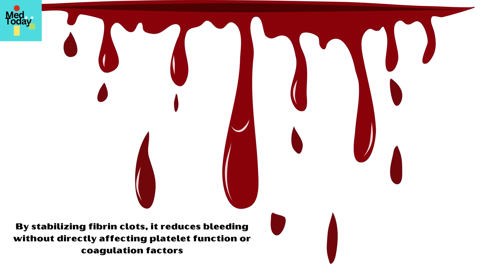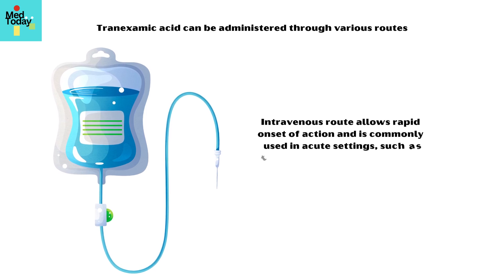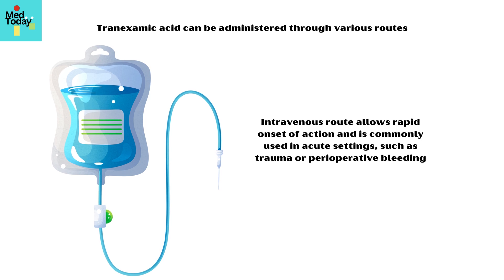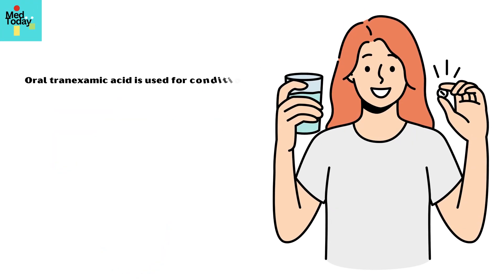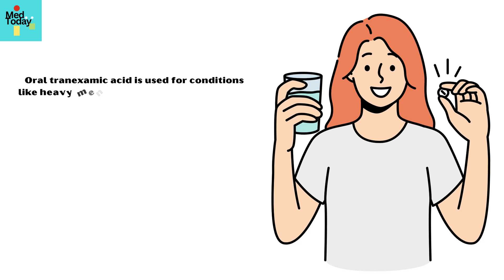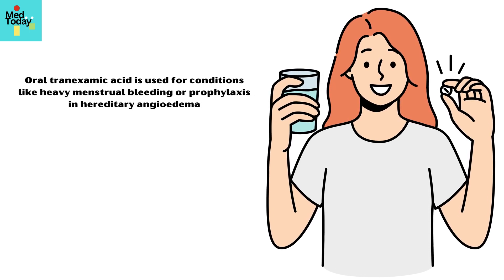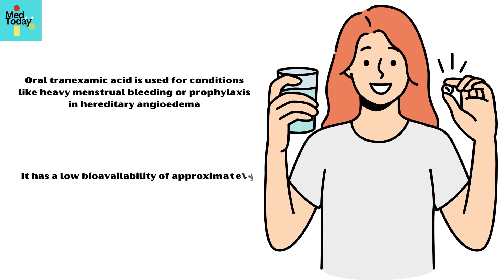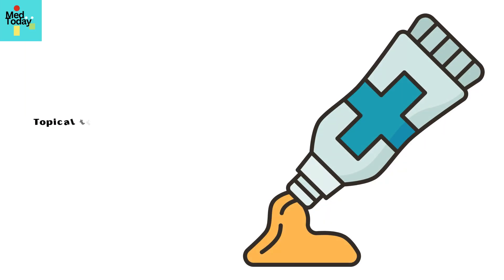Tranexamic acid can be administered through various routes. The intravenous route allows rapid onset of action and is commonly used in acute settings such as trauma or perioperative bleeding. Oral tranexamic acid is used for conditions like heavy menstrual bleeding or prophylaxis in hereditary angioedema, with a low bioavailability of approximately 30 to 50 percent.